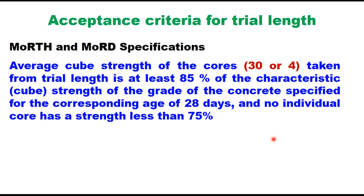For the trial length, material used in construction is also used for casting cubes: 30 cubes are cast for national and state highways (MORTH specification, 100-metre trial length) or 4 cubes for MORD specification (low volume roads). The average cube strength of these 30 or 4 cubes should be at least 85% of the characteristic strength of the specified concrete grade at 28 days, and no individual core should have a strength less than 75% of the characteristic strength. This is the criteria for approving the trial section, to be approved by the engineer in charge.